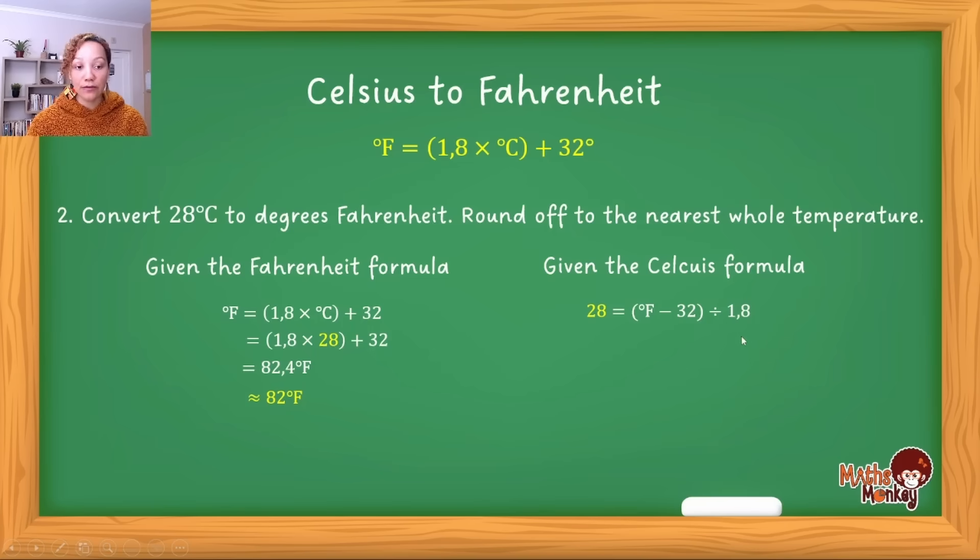We're going to move things over by doing the opposite operation. I'll move what comes after this bracket—it's divided by 1.8, so when I take it over it becomes multiplied by 1.8. That answer is 50.4. Then I move the negative 32, which becomes positive 32. Adding these two values together, I get 82.4, which rounded off gives 82°F.